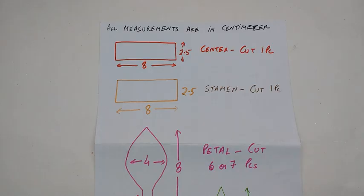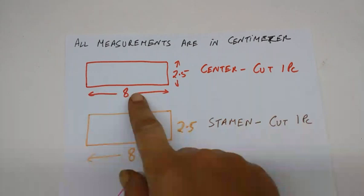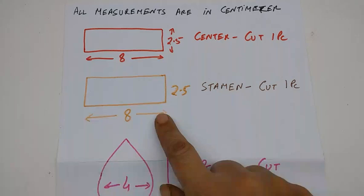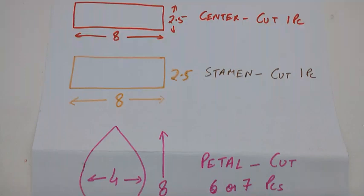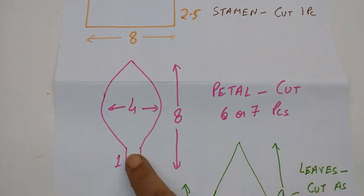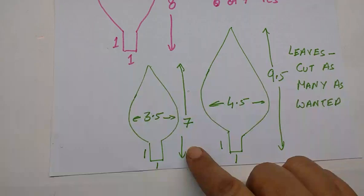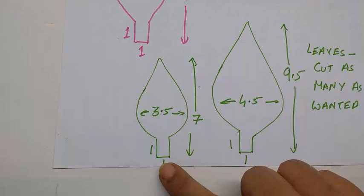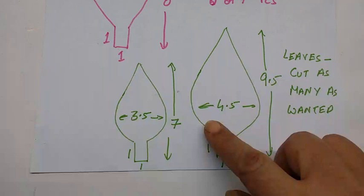All the measurements are in centimeter. The strip for center is 2.5 by 8 centimeter, cut one piece. The strip for stamen is 2.5 by 8 centimeter, cut one. The petal is 8 centimeter by 4 centimeter, cut six or seven pieces. The smaller leaf is 7 centimeter by 3.5 centimeter with 1.1 by 1 centimeter stem. The bigger leaf is 9.5 by 4.5 centimeter with one by one stem. Cut as many as you like.